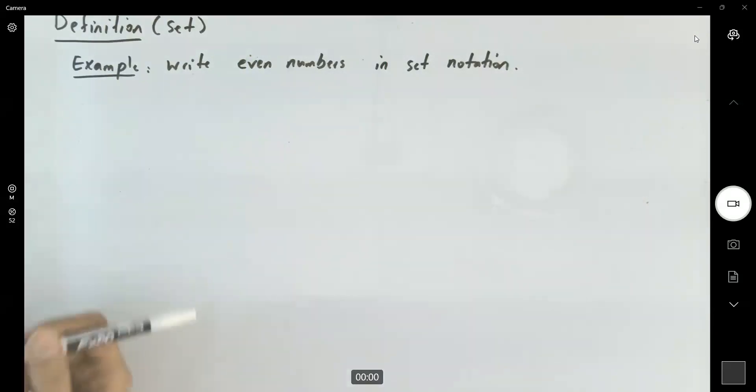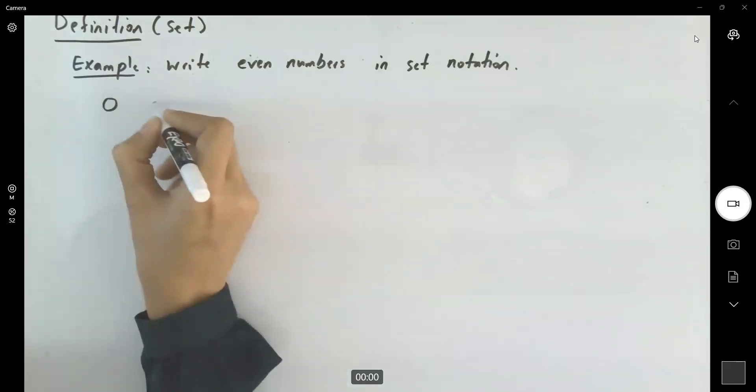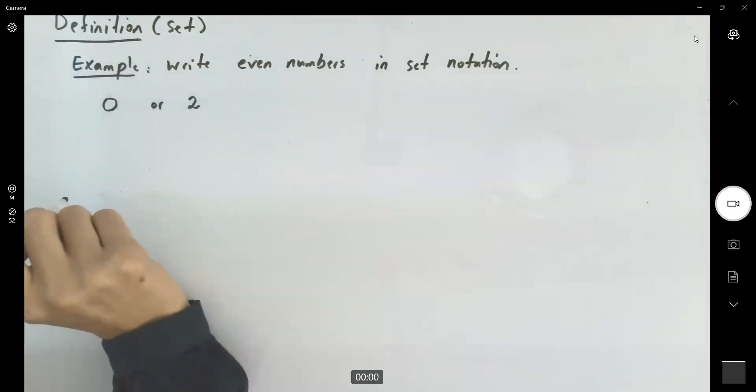Well, you might say that for even numbers, you can write it as - what's the smallest even number? Is it zero or is it two? Which one is the smallest even number?